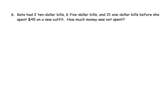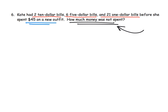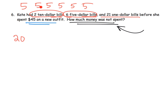The last problem: Kate had two ten-dollar bills, six five-dollar bills, and twenty-one one-dollar bills before she spent forty-five dollars on a new outfit. How much money was not spent — how much was left over? Let's figure out how much she had at the beginning. Two ten-dollar bills is twenty. Six five-dollar bills — one, two, three, four, five, six: five, ten, fifteen, twenty, twenty-five, thirty — so six five-dollar bills is thirty. Plus twenty-one one-dollar bills.